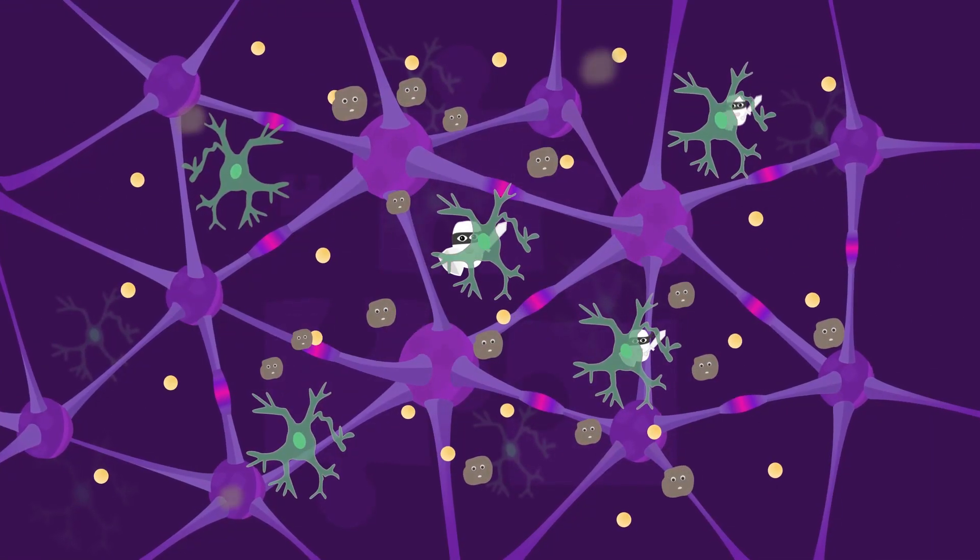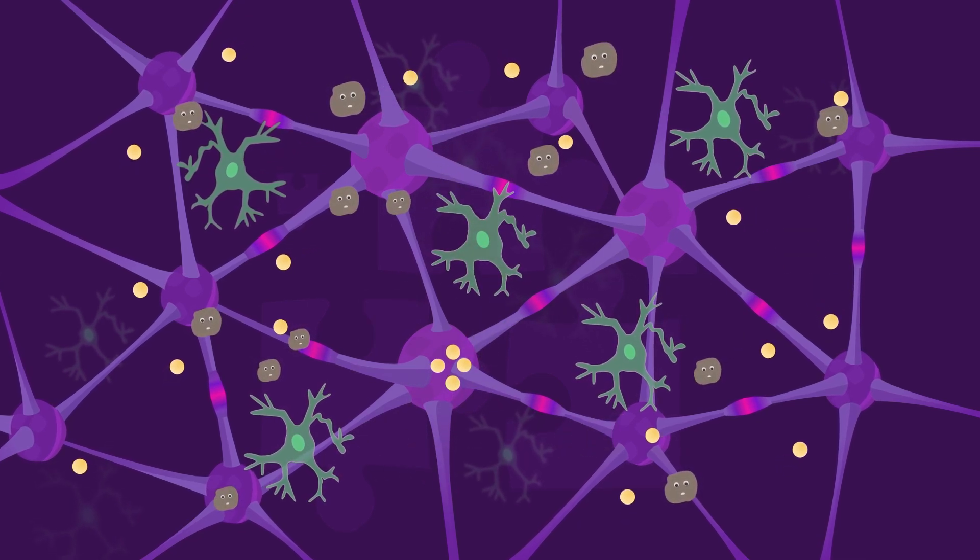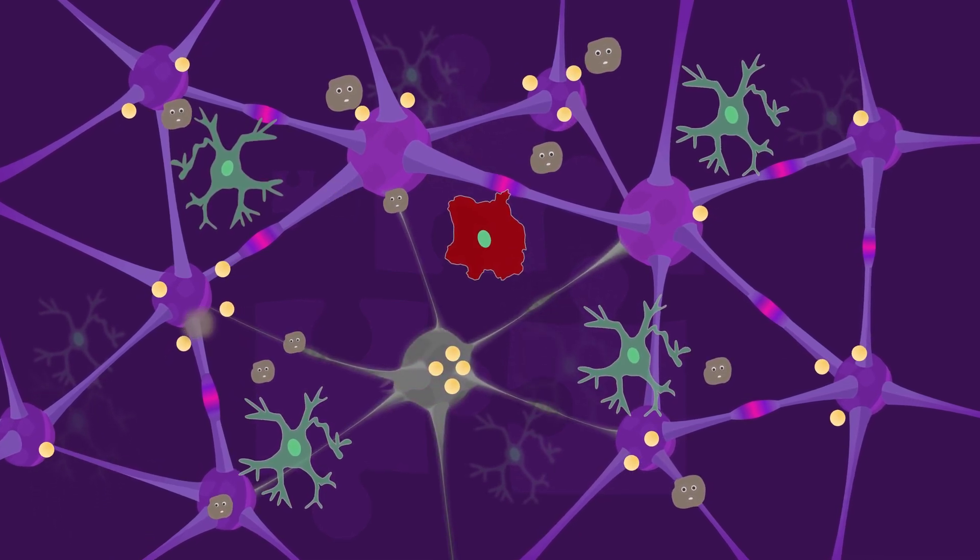When compromised by beta amyloid plaques, lack of sleep, a degraded blood-brain barrier, toxins from pollution or from other causes, stress further weakens your vulnerable brain cells, and they die.